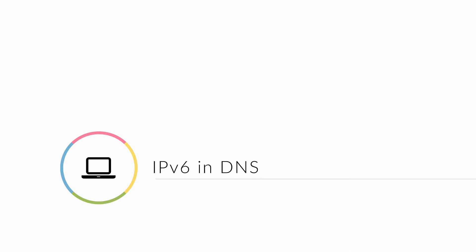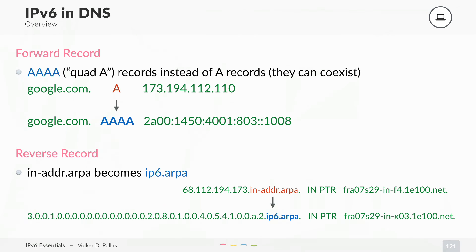Next is IPv6 in DNS. We will not go into detail here, I just will explain the different types of records. The forward record, you probably know as the A record in IPv4, is now quad A — that's 4xA. This replaces the A record. So if you are opening a browser, typing in google.com, then your host will send a DNS request for the A record of google.com, as you can see in the example. With IPv4 you will get back the 173 address, and in IPv6, if you do the same DNS request, you will get the quad A record for the IPv6 address of google.com.